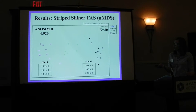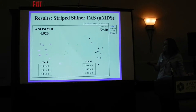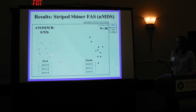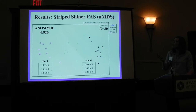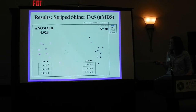Lastly, striped shiner showed those three separate groups, just as before, and actually showed my best separation between the three sites. It followed along with round goby, where the headwaters and the mouth are separated by those certain fatty acids.